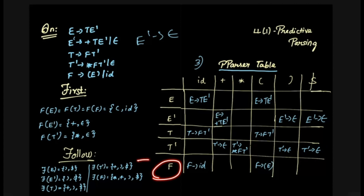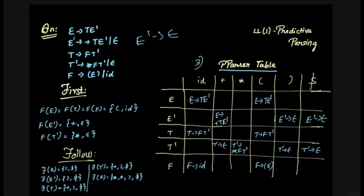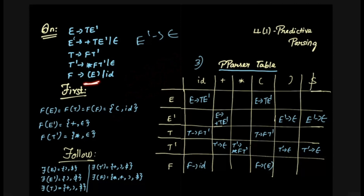Now we fill the F row. Using FIRST of F, which is open bracket and id: F tends to open-bracket E close-bracket goes in the open bracket column, and F tends to id goes in the id column. So we have two different columns filled. Now we have the complete predictive parser table constructed.